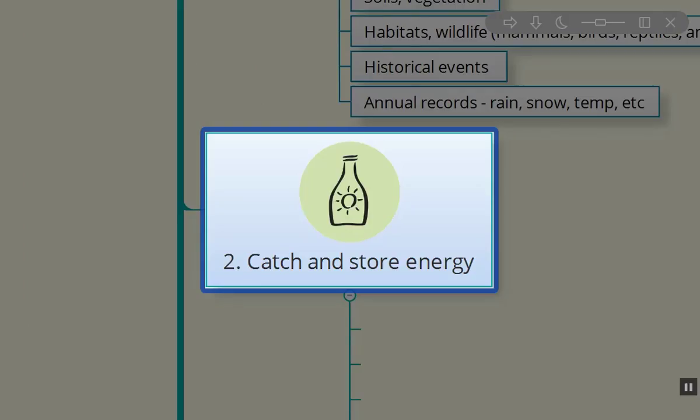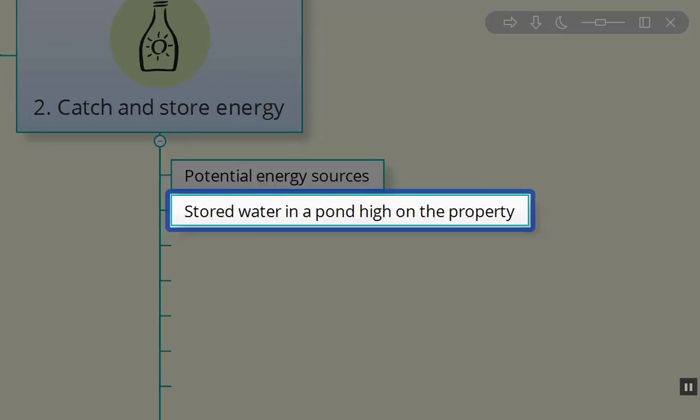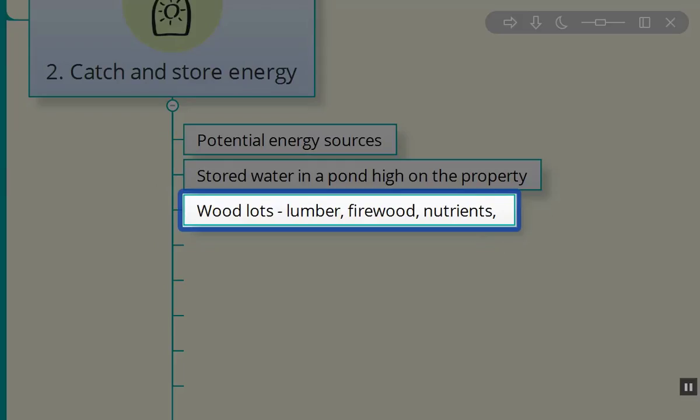Now about permaculture principle number two, catch and store energy. So first we have to expand our idea of what energy is. There's potential energy sources like water stored high in ponds on the site have the potential energy. They don't have the biologic diversity, but they have lots of potential energy. We don't have to spend money to irrigate our crops or take care of our household needs. The woodlots, lumber, firewood, nutrients, all of those are energy sources on site.